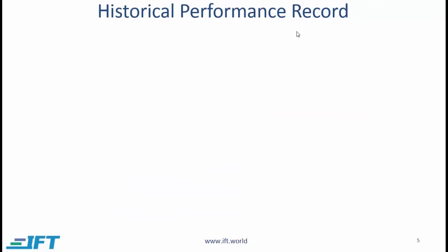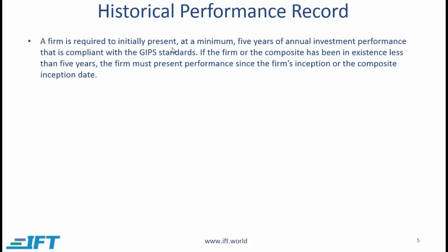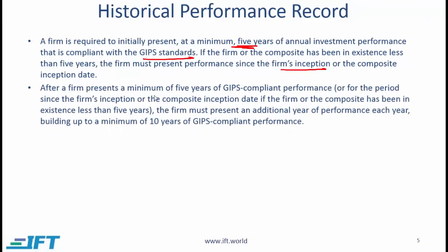Historical performance record. A firm is required to initially present at a minimum five years of annual investment performance that is compliant with the GIPS standards. If the firm or the composite has been in existence less than five years, the firm must present performance since the firm's inception or the composite inception date. After presenting a minimum of five years of GIPS compliant performance, the firm must present an additional year of performance each year, building up to a minimum of 10 years of GIPS compliant performance.